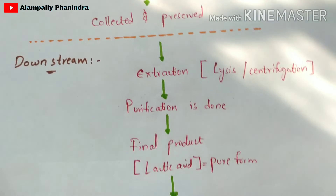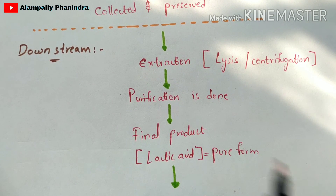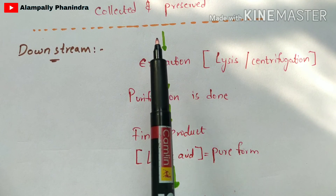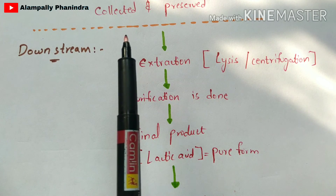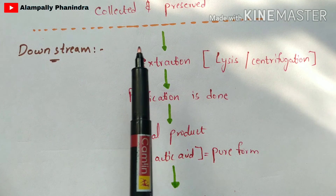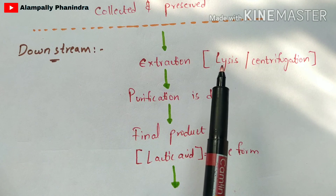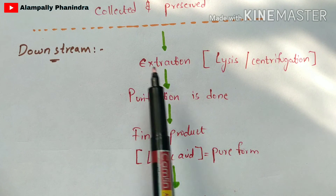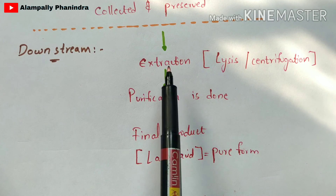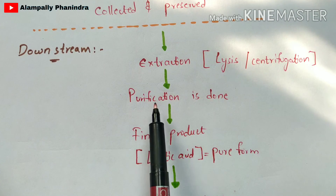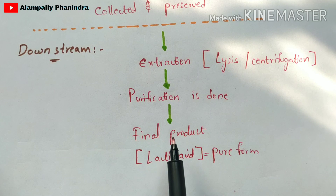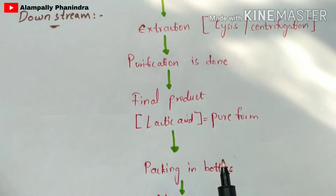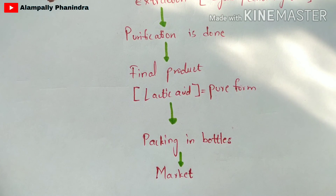In the downstream processing, you take the collected crude raw product and extract it using a lysis process or centrifugation process. You then purify it, and the final product — pure lactic acid — is obtained. It is then packed in bottles and supplied to the market.